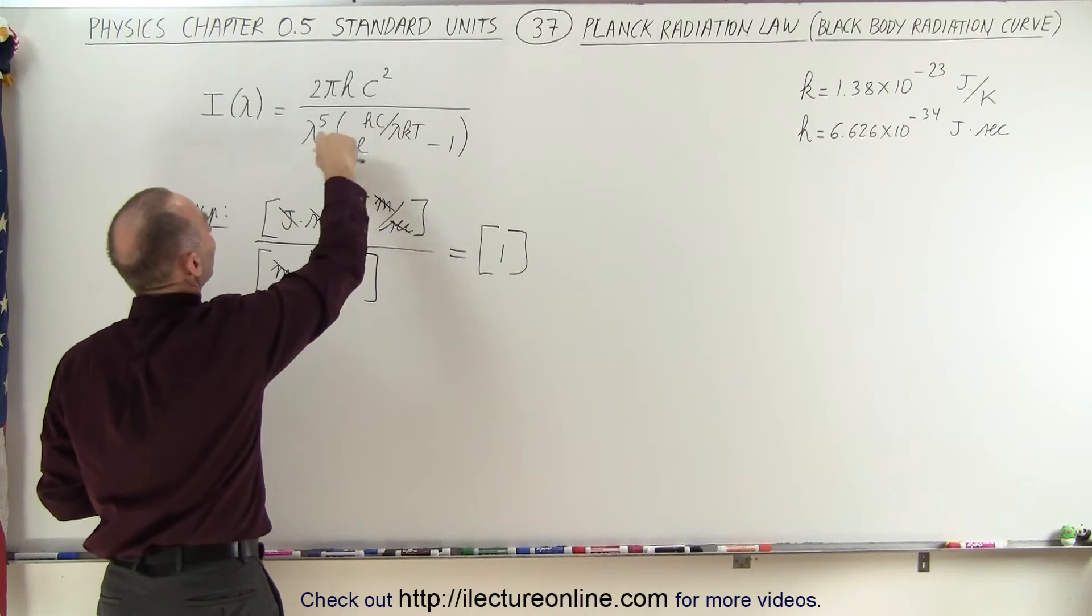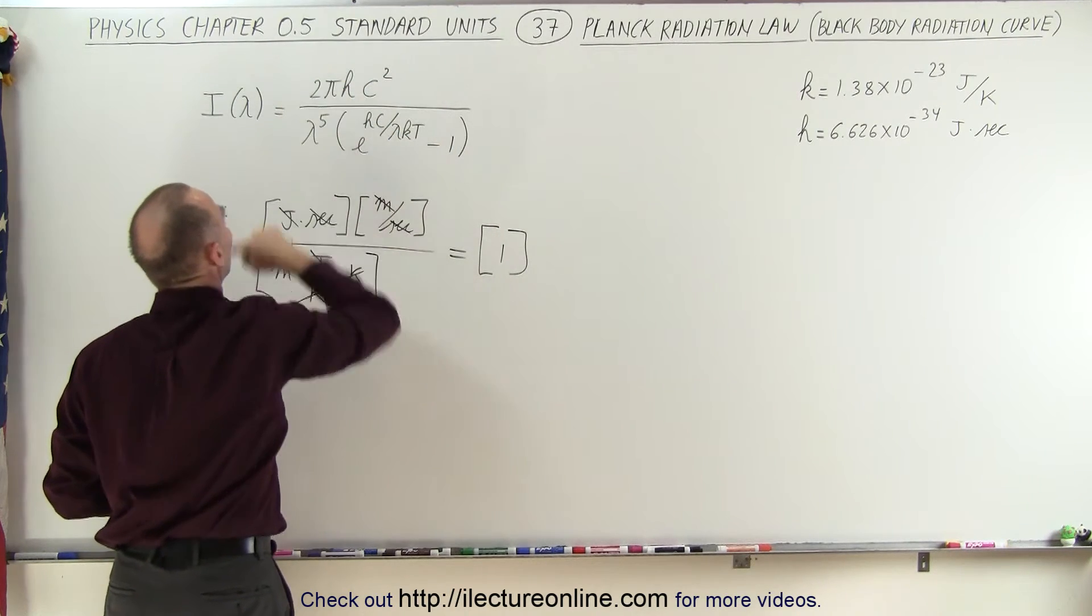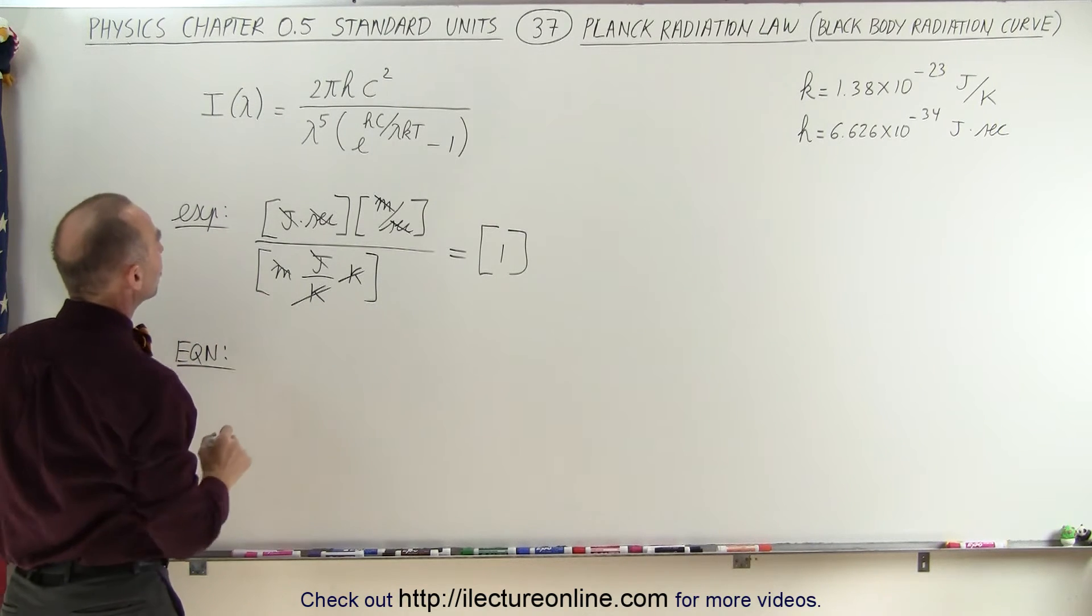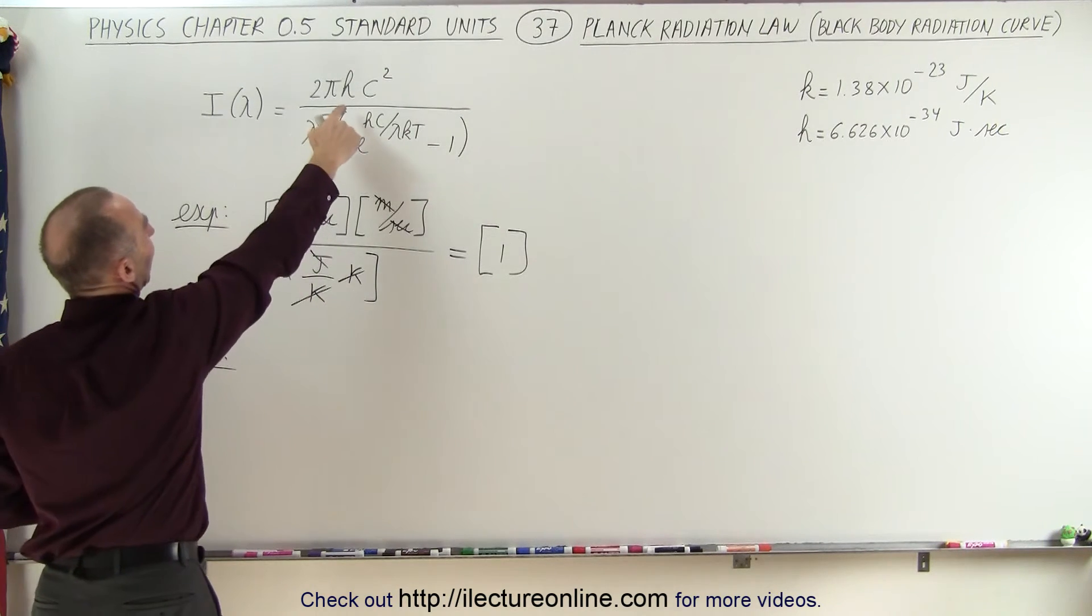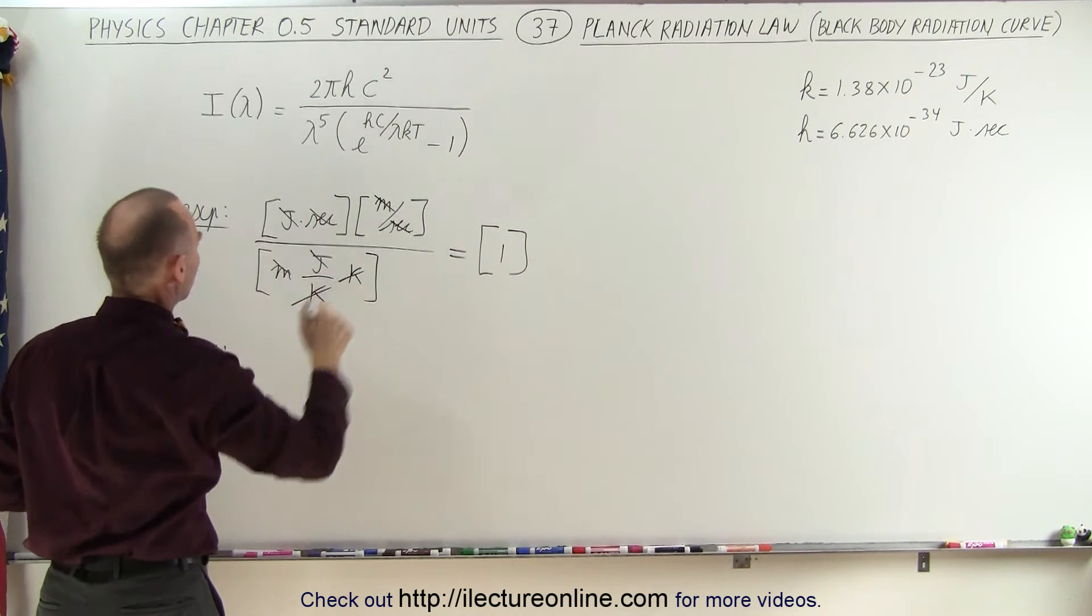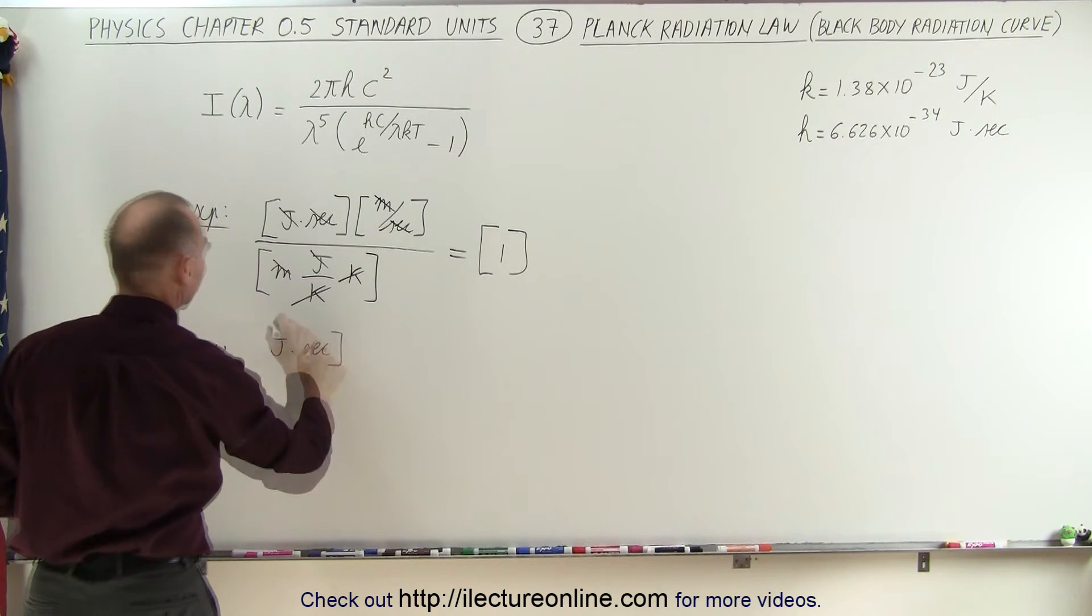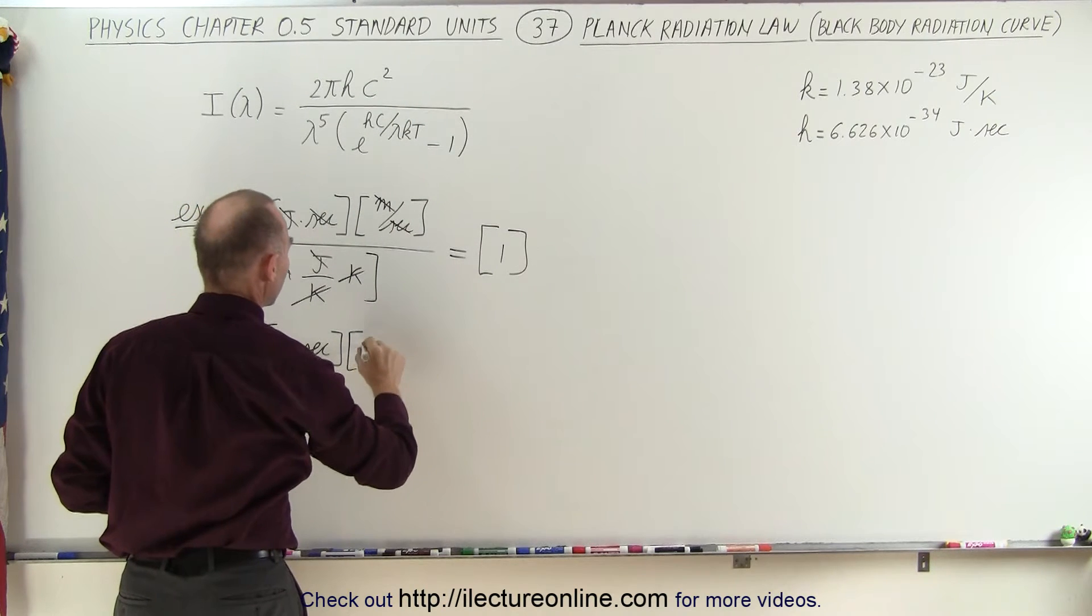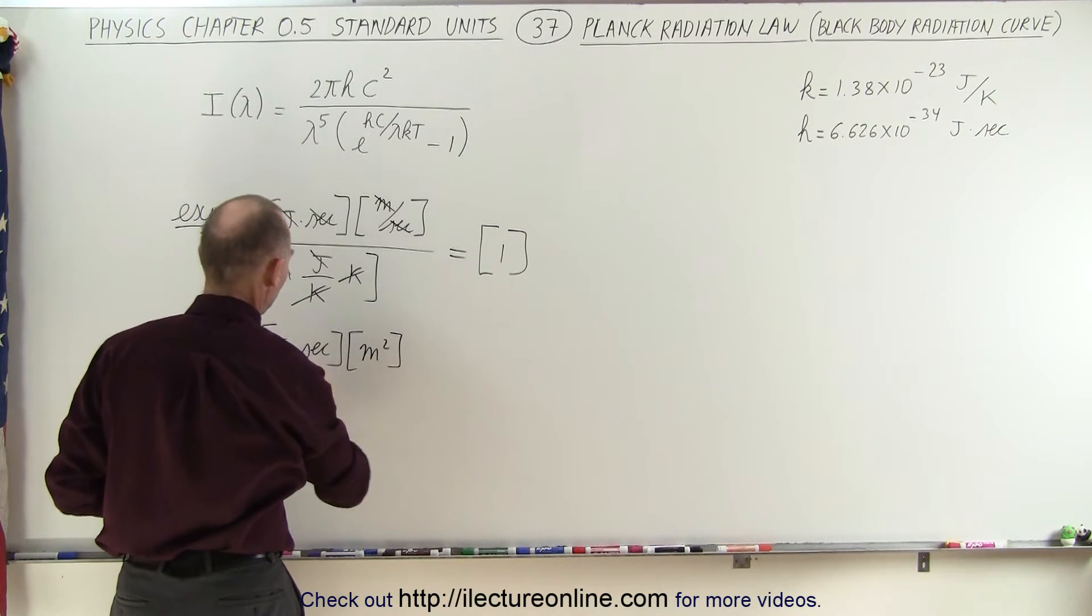All we have left now is the units for this portion of the equation. So, let's write equation and see what the units are. In the numerator, we have Planck's constant. The units are joules times seconds. And we have the speed of light squared,